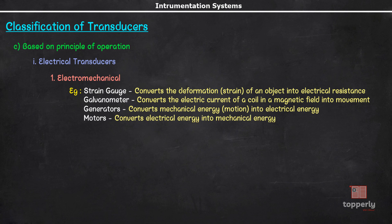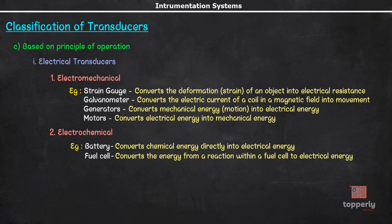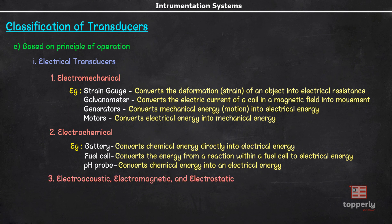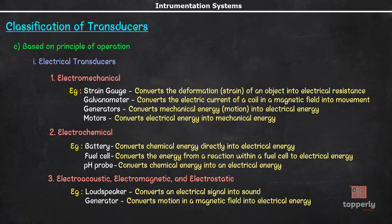Now, the next subclass is electrochemical which includes battery, fuel cell, pH probe, etc. The next subclass is electroacoustic, electromagnetic, or electrostatic transducers. Example for electroacoustic is loudspeaker. Example for electromagnetic is generator. And for electrostatic, an example is Van de Graaff generator. So these are the three subclasses of electrical transducers.